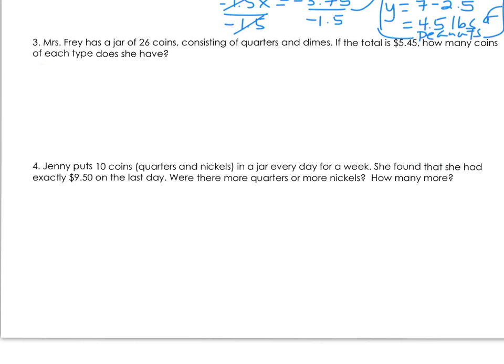See if you can set up the two equations in the system. If we know that we have 26 coins total, what would that look like? x plus y equals 26 represents the total amount of each type of coin. Here's the trickier part. If the total is $5.45, I like to eliminate the decimal right away. Think about it like this: Quarters are worth 25 cents, technically 0.25 of a dollar. If I multiply by 100 and say quarters are worth 25 cents, that eliminates the decimal. Dimes are worth 10 cents.